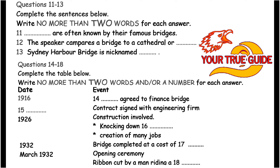The opening ceremony took place on the 19th of March 1932, and a large crowd gathered for the occasion. The Premier of the state was just about to cut the ribbon when suddenly a man rode through the crowd, mounted on a horse, and slashed the ribbon with his sword. He wanted to be the first to cut the ribbon. Anyway, they tied the ribbon back together, and the ceremony continued.